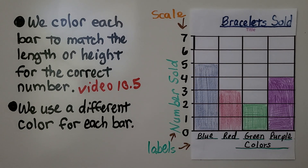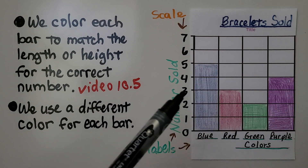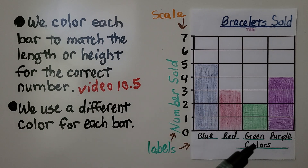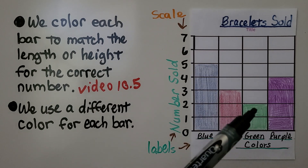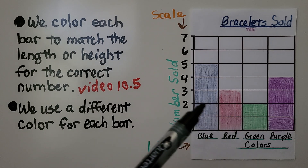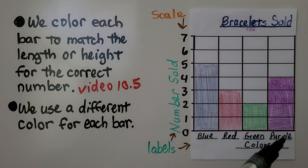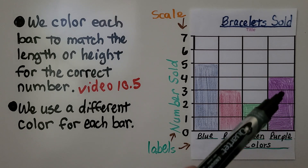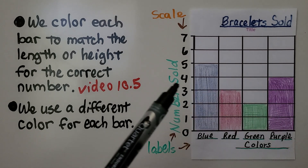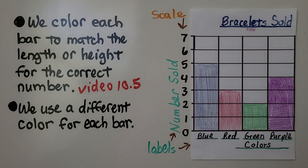If the data says that red is 3, we color the bar up to 3. If it says green is 2, we color the bar up to 2. If it says purple is 4, we color it up to the number 4 on the scale.